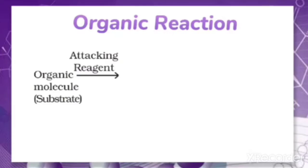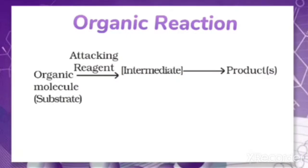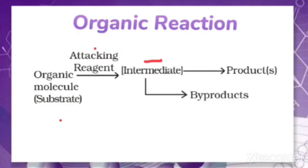Due to the attack of this reagent on the substrate, it leads to the formation of one or more intermediates. Before the formation of a product, an intermediate is formed — that means in between stages an intermediate is formed, which finally gives rise to the product. In some reactions there will also be byproducts. So the organic reaction is represented as: substrate reacts with an attacking reagent, leads to the formation of one or more intermediates, and finally gives rise to the product and byproduct.